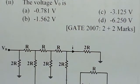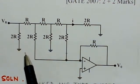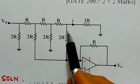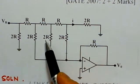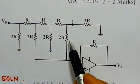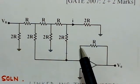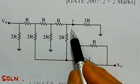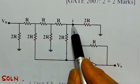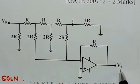Looking at the given network, this is a D-to-A converter using an R-2R ladder network at its input, along with a corresponding operational amplifier in an inverting configuration. We have to determine two things: first, the current in a specific branch of the circuit, and second, the output voltage at the output of the operational amplifier.